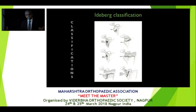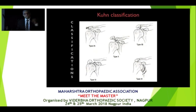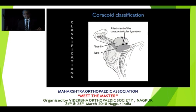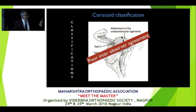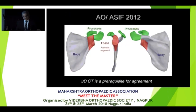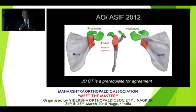Understanding these fractures has always been a big challenge. The Ideberg classification is one of the most commonly used, but it covers body fractures and the articular segment. Kohn described the classification for the acromial process, and there is a separate coracoid fracture classification as well. With so many subclassifications for one bone, and all having poor inter-observer agreement, the AO-ASF group in 2012 came up with a relatively simple classification: either the body, the articular segment, or the processes — which allows you to determine fracture management.